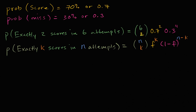Now that we've spent a couple of videos exploring a scenario where I'm taking multiple free throws and figuring out the probability of making k of the scores in six attempts or in n attempts, let's actually define a random variable using this scenario and see if we can construct its probability distribution. And we'll actually see that it's a binomial distribution.